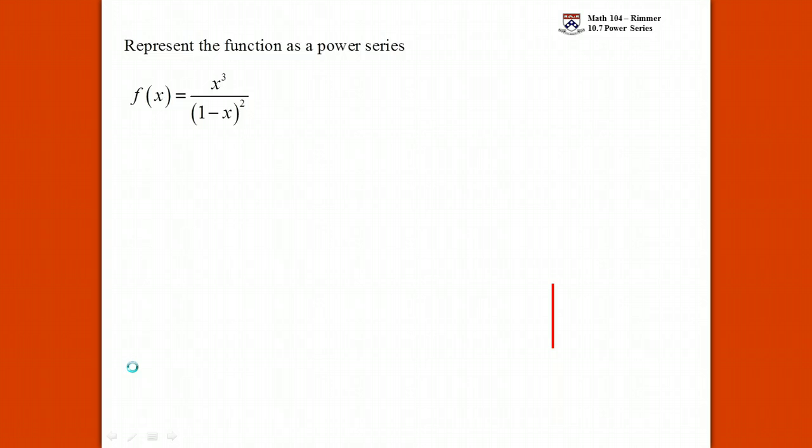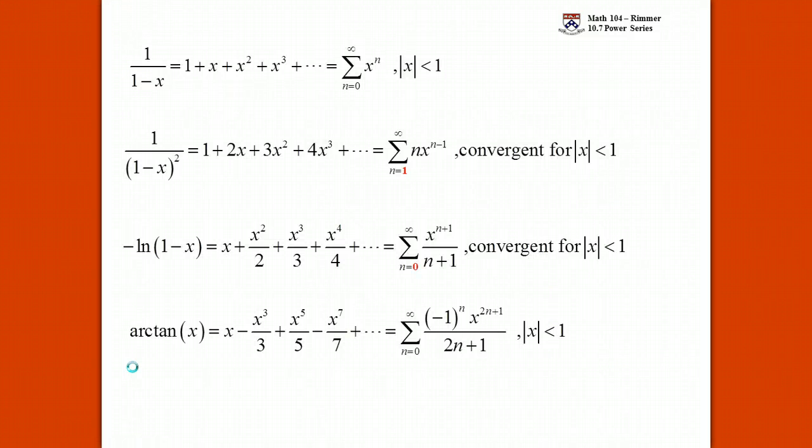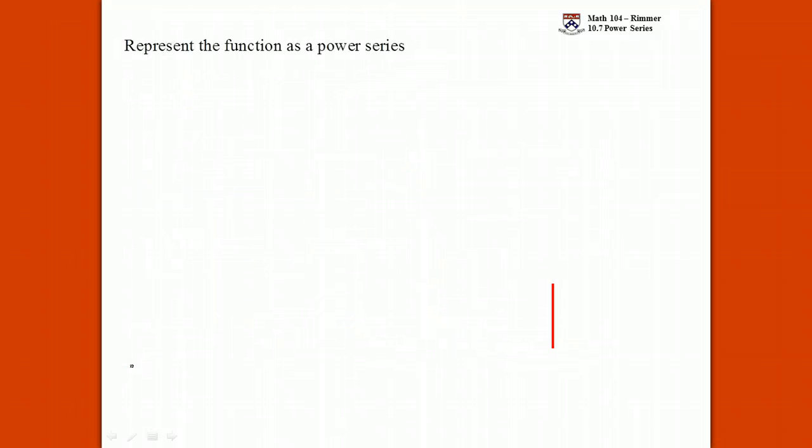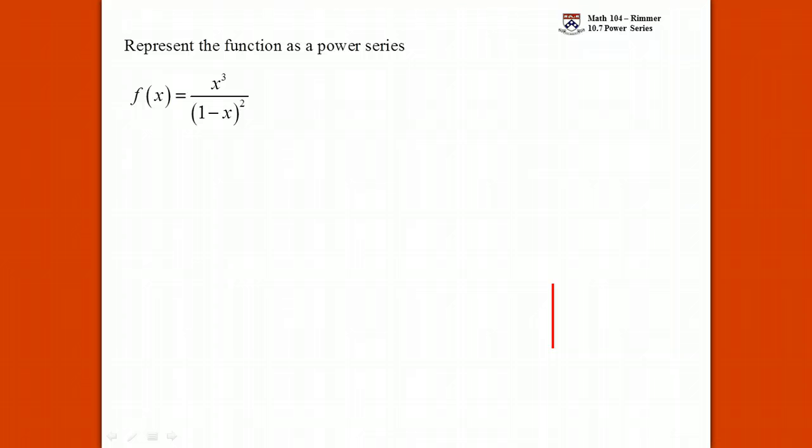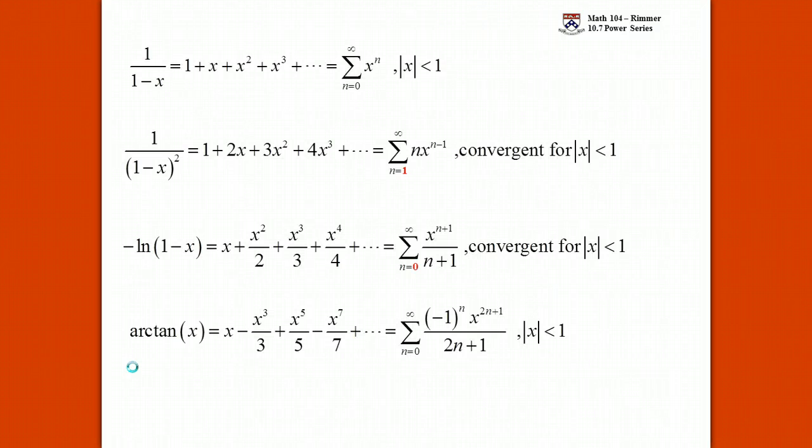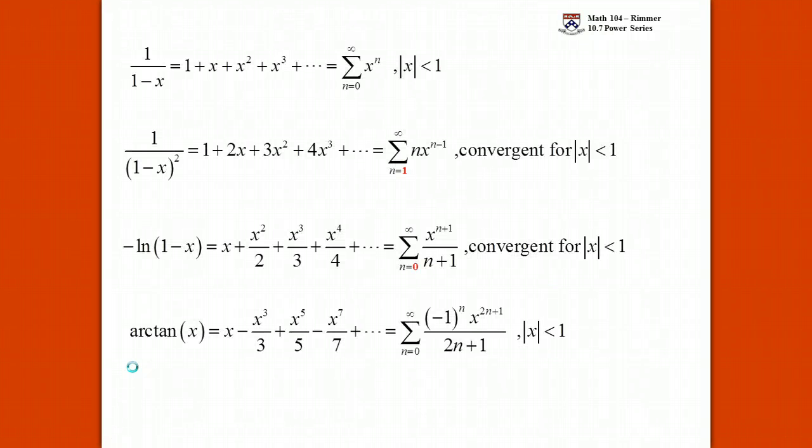Now, okay, so you should work on this one for me. x cubed over 1 minus x quantity squared. Knowing these four guys here, let's do some alterations on this. All right, using what we know, now get to something that we don't know. Now which one of the four are we going to use? The second one. Because this is just x cubed times the second one.